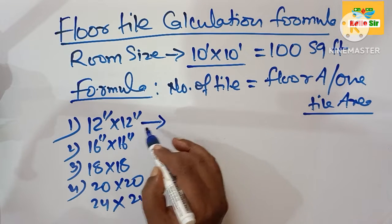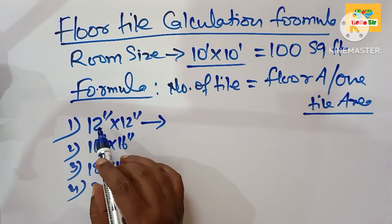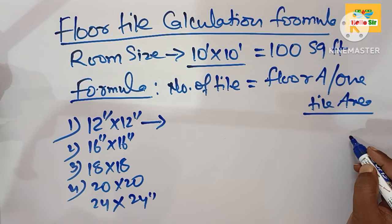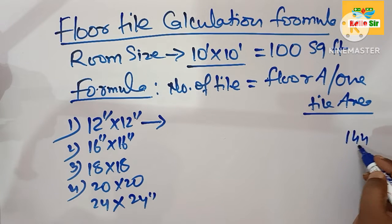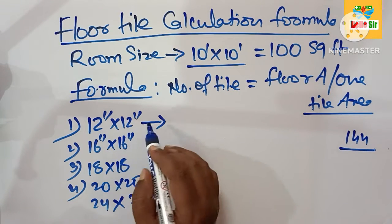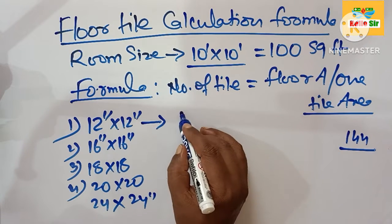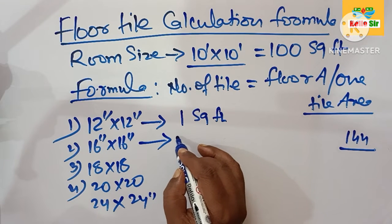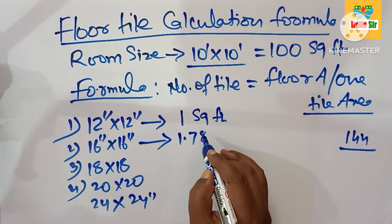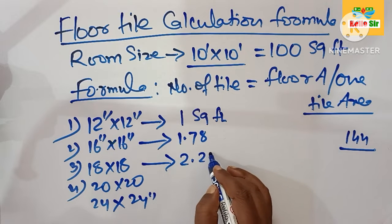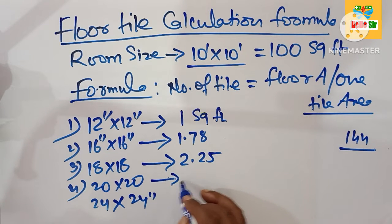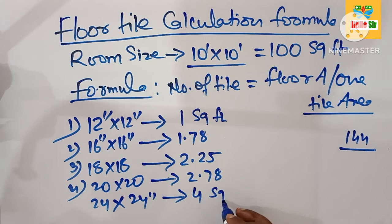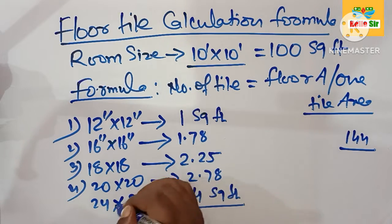If you want to calculate the area of one tile, multiply its length and width, then divide the result in square inches by 144 to get the area in square feet. For example: a 12x12 tile is 1 square foot, a 16x16 tile is 1.78 square feet, an 18x18 tile is 2.25 square feet, a 20x20 tile is 2.78 square feet, and a 24x24 tile is 4 square feet.